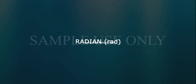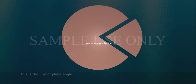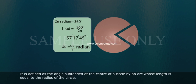Radian (rad). This is the unit of plane angle. It is defined as the angle subtended at the center of a circle by an arc whose length is equal to the radius of the circle.